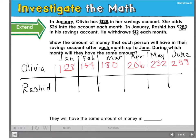Now, Rashid started in January with $280. But instead of adding money to his account, he withdraws or subtracts $12 each month. So that means in February he would have $268. In March, $256. Subtract 12 more to find April, $244.